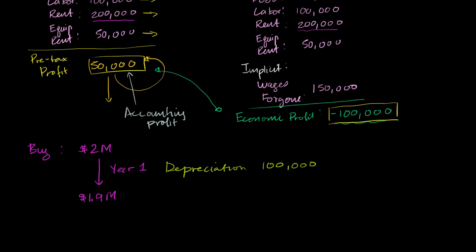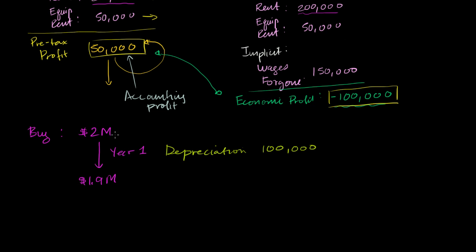I have also lost out on the ability to invest this $2 million in other things. Maybe I could have invested the $2 million at a 5% rate and gotten some interest on it. So I also have the opportunity cost of capital, of not investing that $2 million someplace else. 5% of $2 million is $100,000.